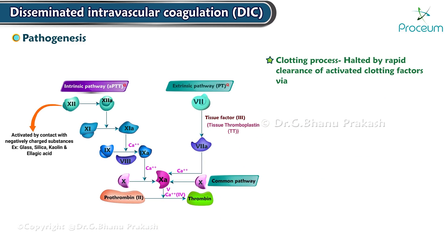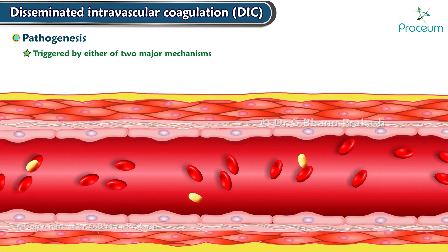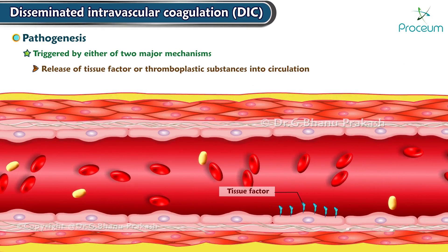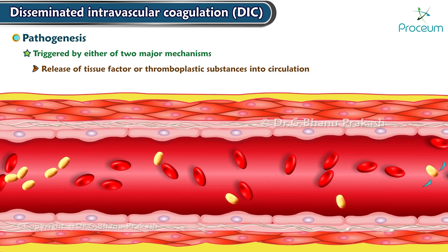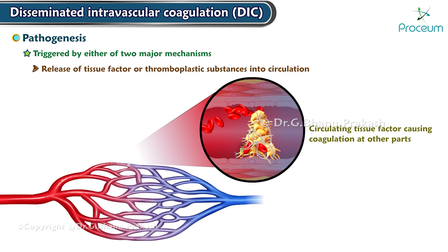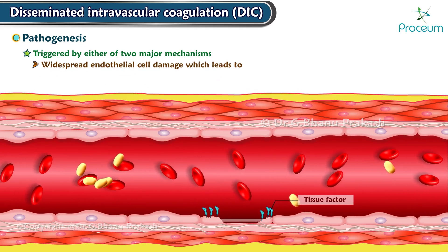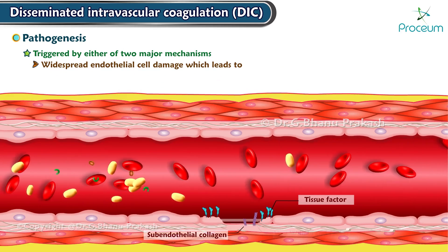The clotting process is halted by rapid clearance of activated clotting factors via macrophages in the liver, endogenous anticoagulants like protein C, and concomitant activation of fibrinolysis. DIC is triggered by either of the two major mechanisms: the release of tissue factor or thromboplastic substances into the circulation, or widespread endothelial cell damage, which leads to release of tissue factor and exposure of subendothelial collagen and von Willebrand factor.